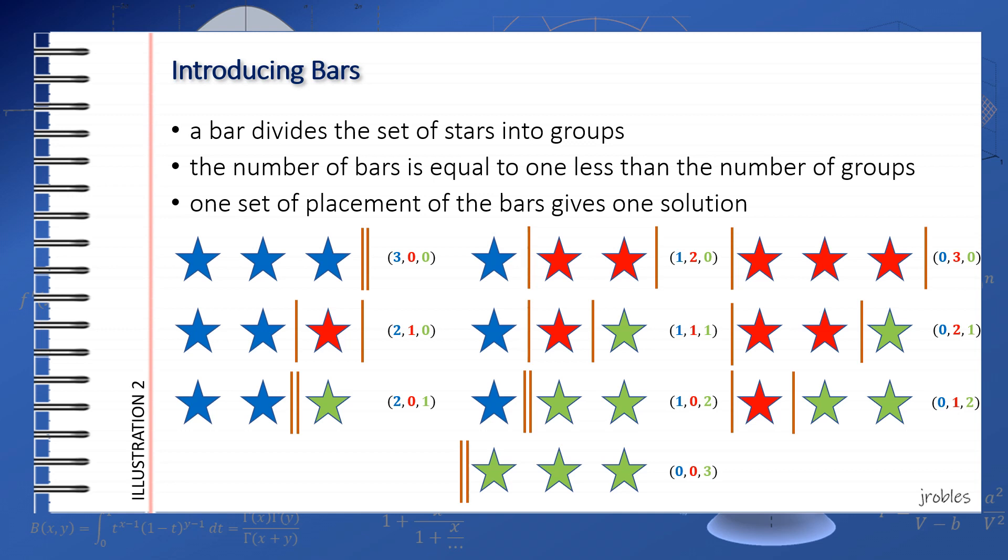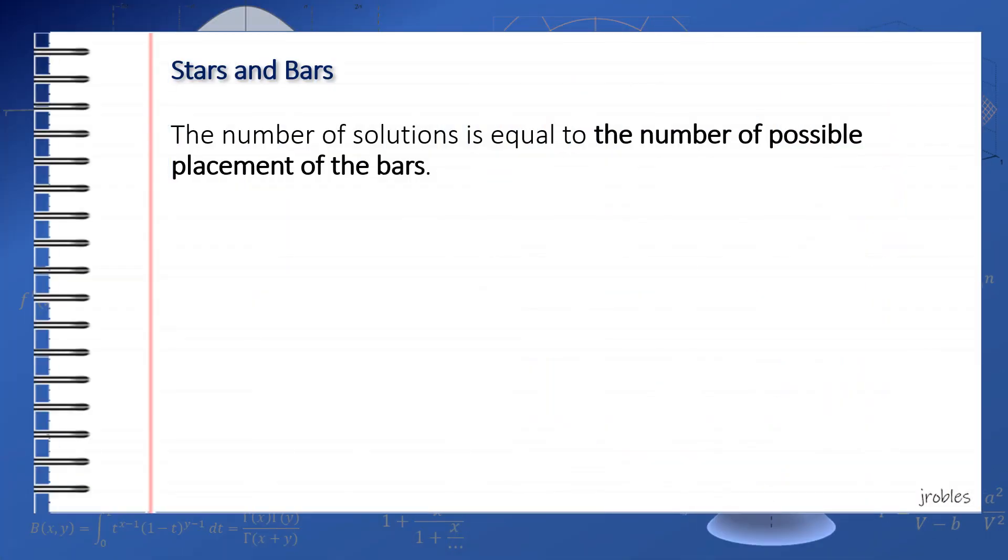Considering the two illustrations, I think it's safe to say that the number of solutions for this problem is equal to the number of positions that the bars can occupy. This is the method of stars and bars. Essentially, we are determining the number of possible groupings of the stars by placing the bars in between the stars.